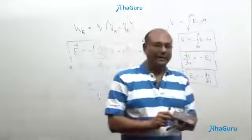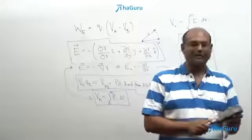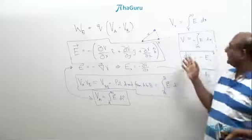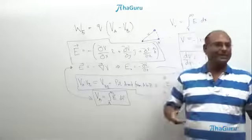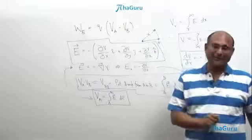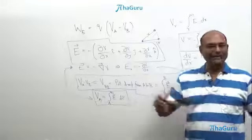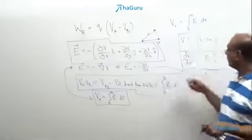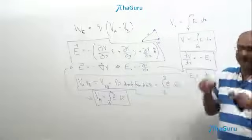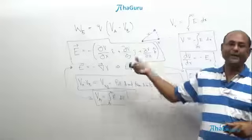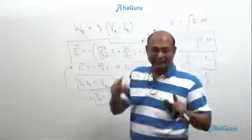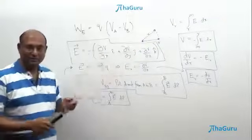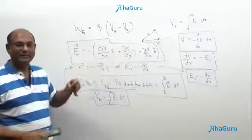So from E you can find V, and from V you can find E. The key practical advantage is that calculating V is much easier — you just sum up kq/r contributions, which are scalars. Once you know V as a function of r or x,y,z, finding E is just a differentiation. Finding E directly using vectors was messy, but going through V makes the calculation quite straightforward.